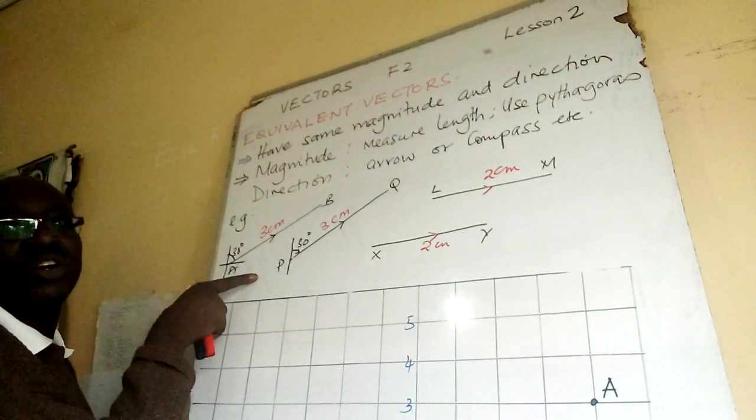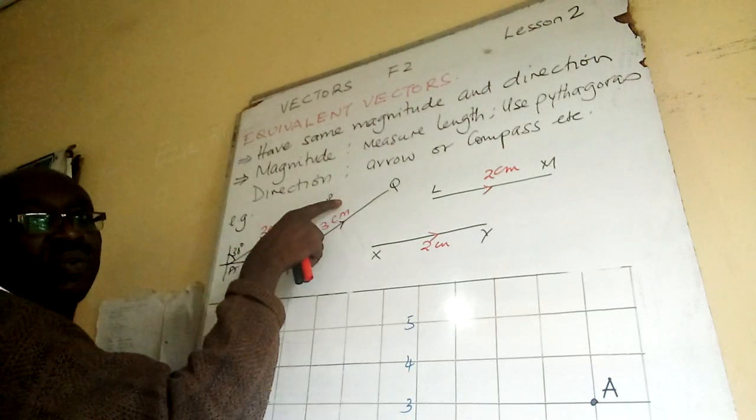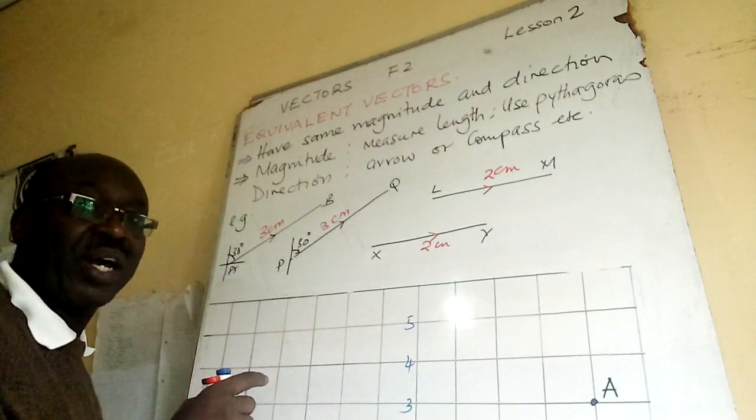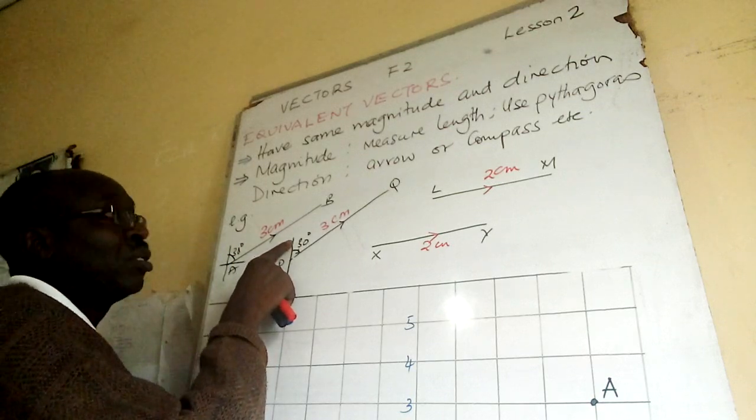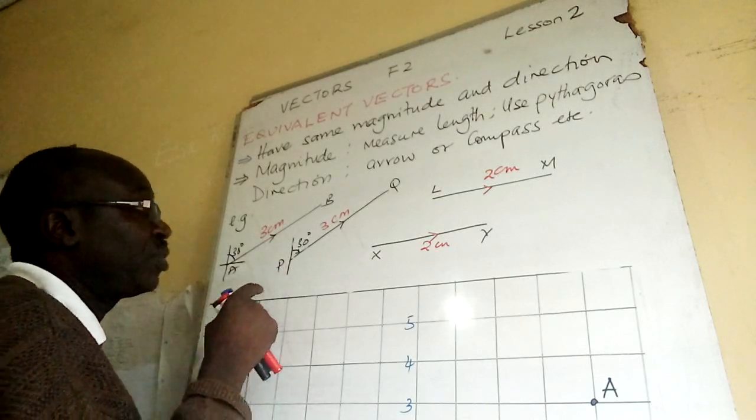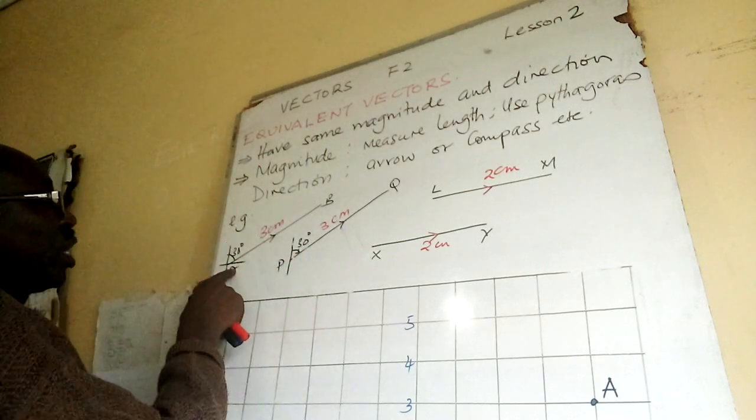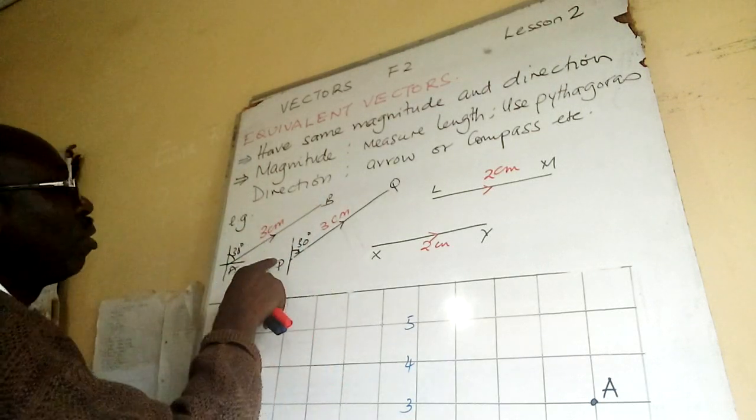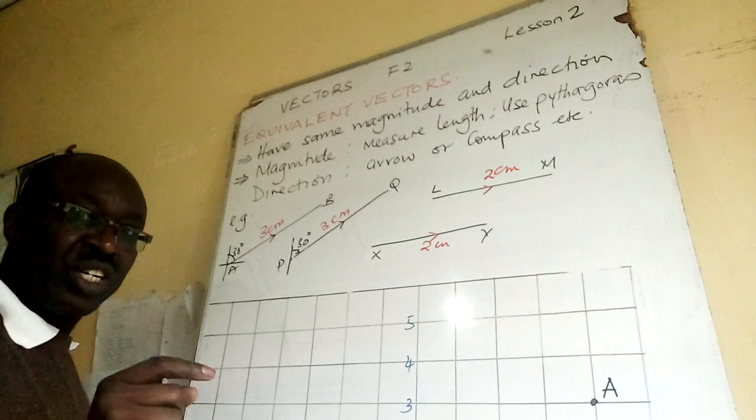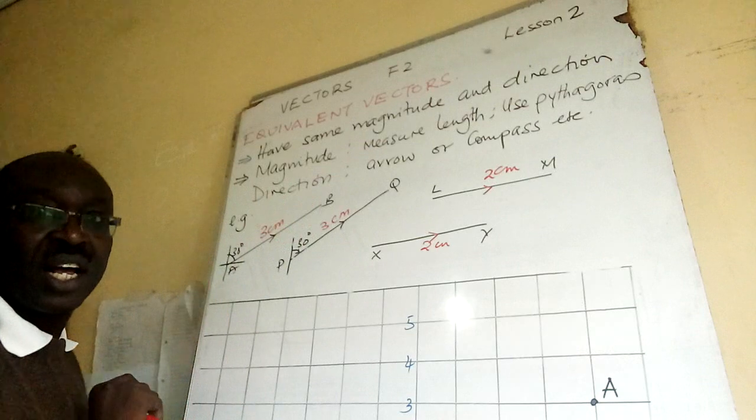For example, using a bearing method from north 30 degrees towards B, three centimeters. Then someone is somewhere also from north 30 degrees towards Q from P and got three centimeters. Then these two, AB is equivalent to PQ. The magnitude in red is equal, the directions are the same.